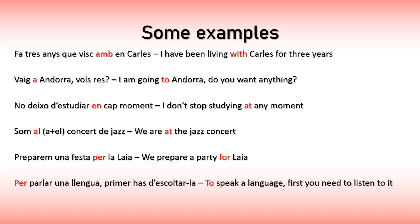'Som al concert de jazz' — 'We are at the jazz concert.' The jazz concert is a physical and specific place, so you use the preposition A. Even though you write AL, it is a union between A and EL, and the preposition A is included in there. 'Preparem una festa per la Laia' — 'We prepare a party for Laia.' Laia is the receiver — the indirect object — of everything that is happening, so PER la Laia is the preposition that indicates that.